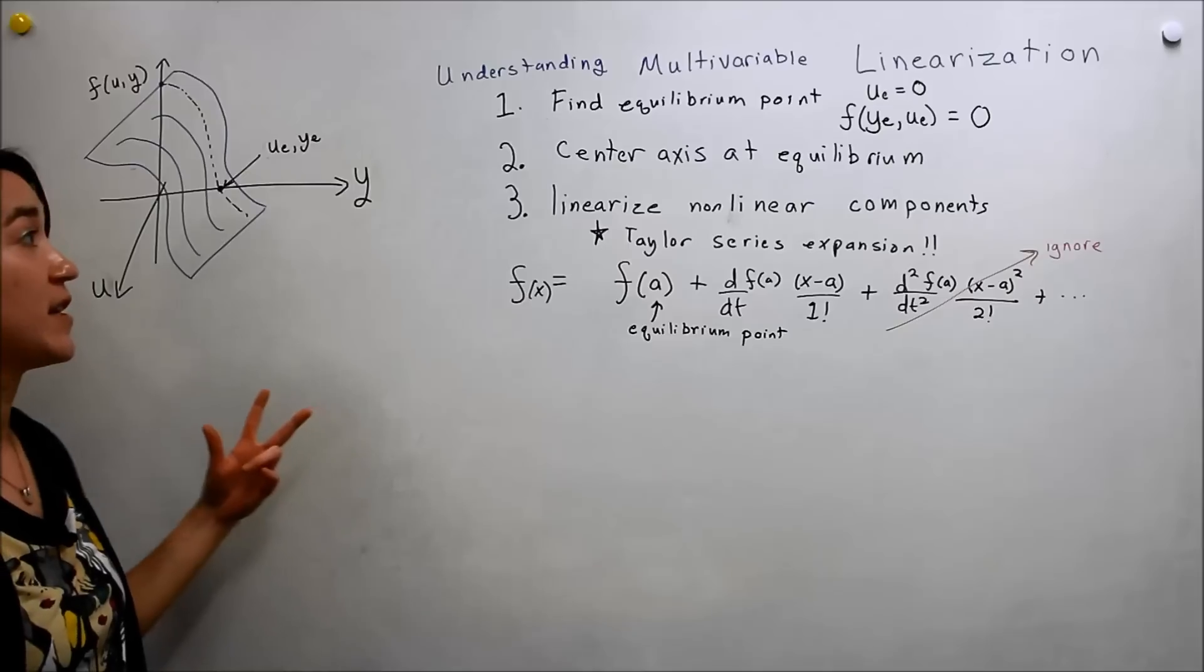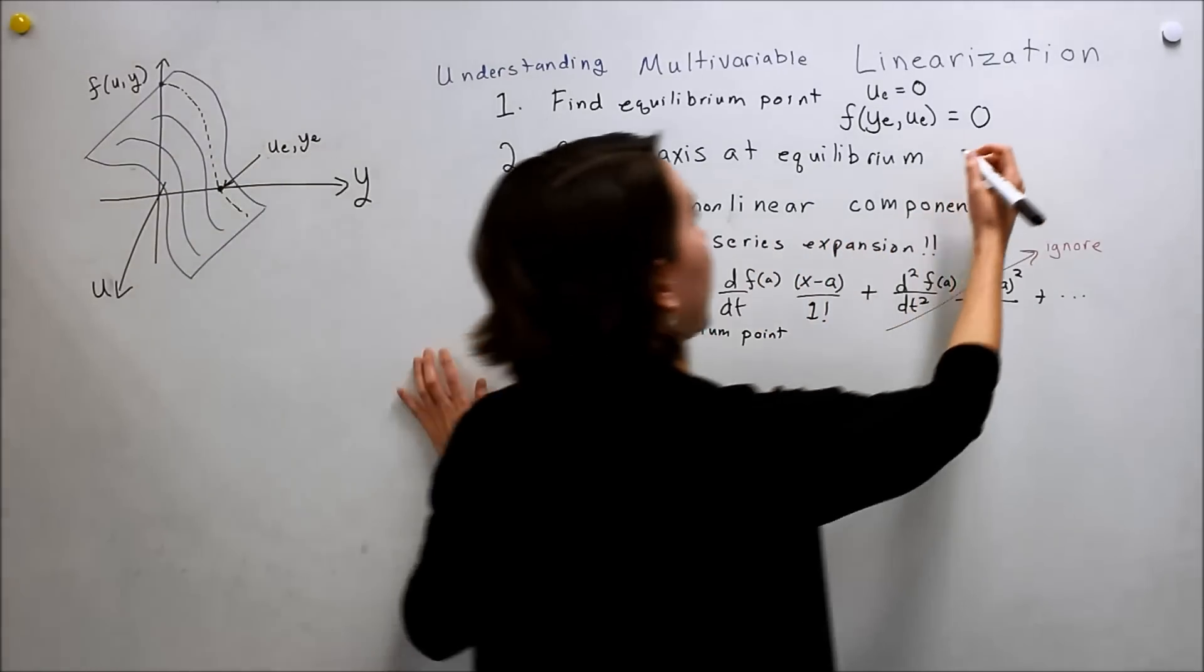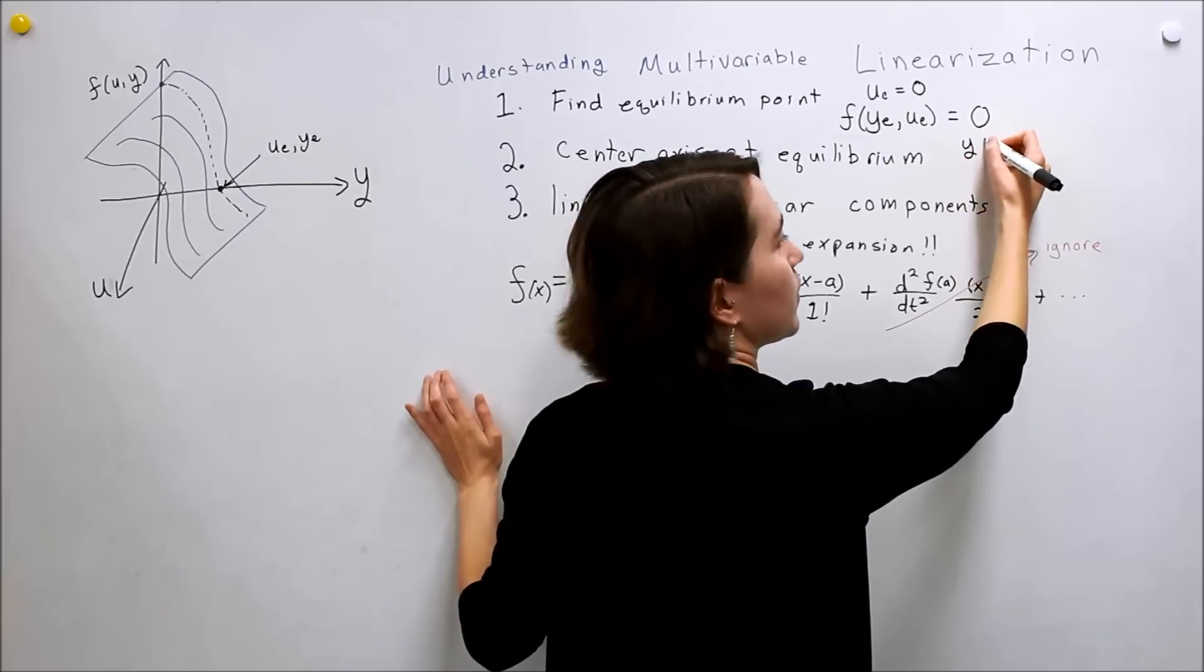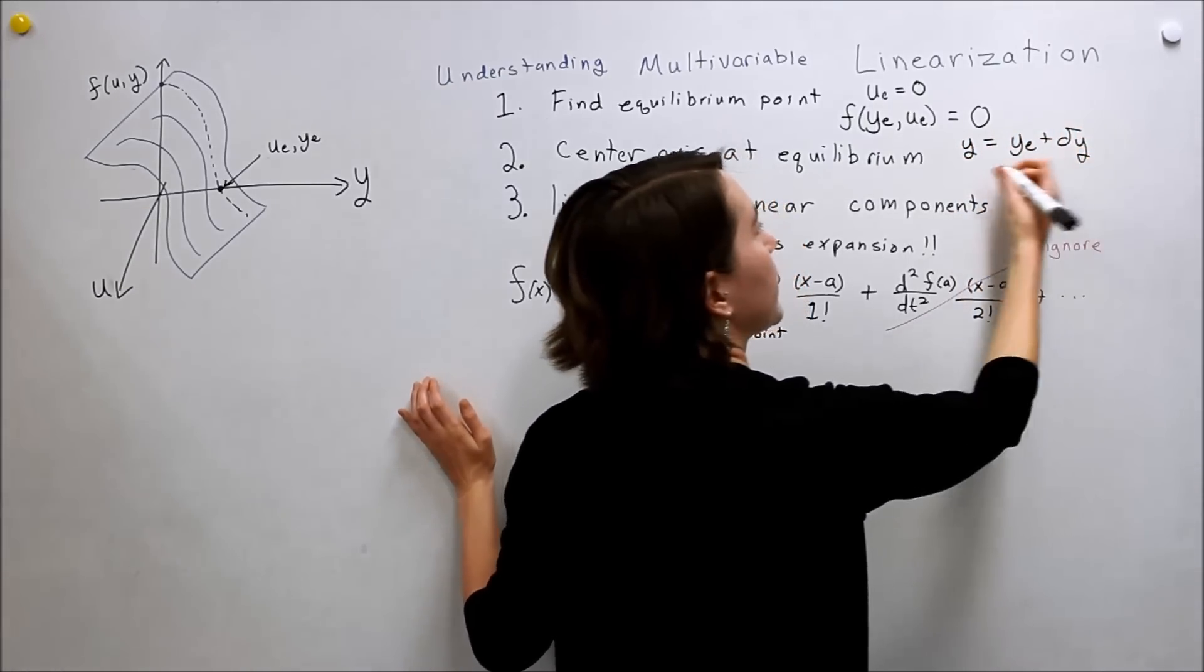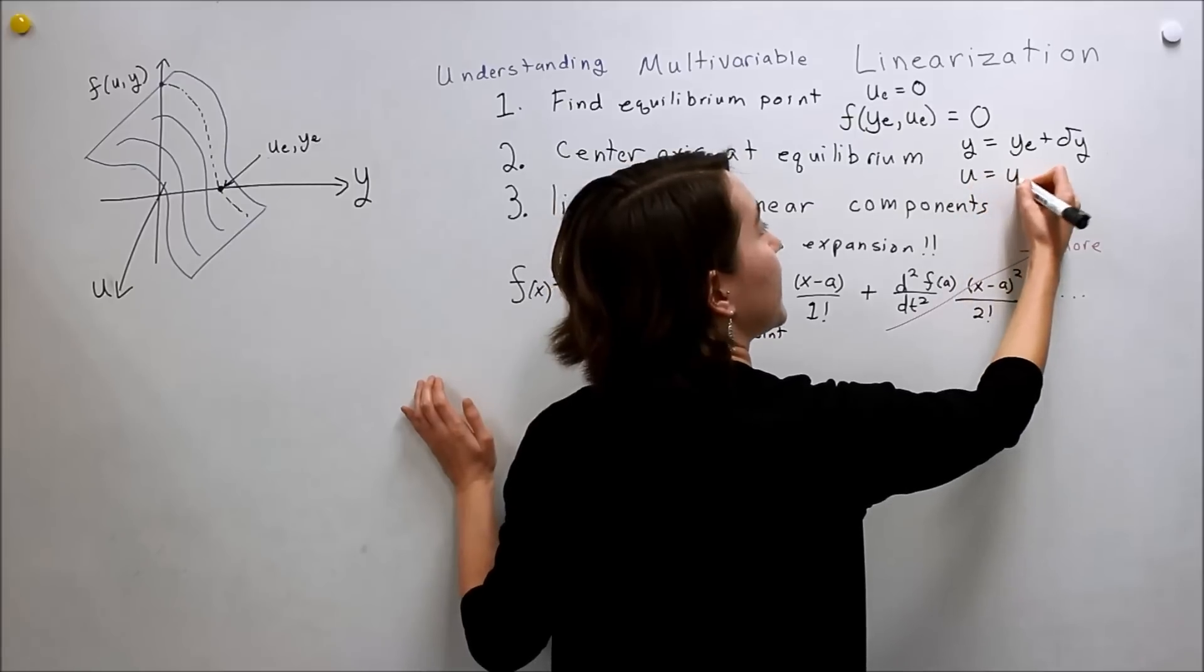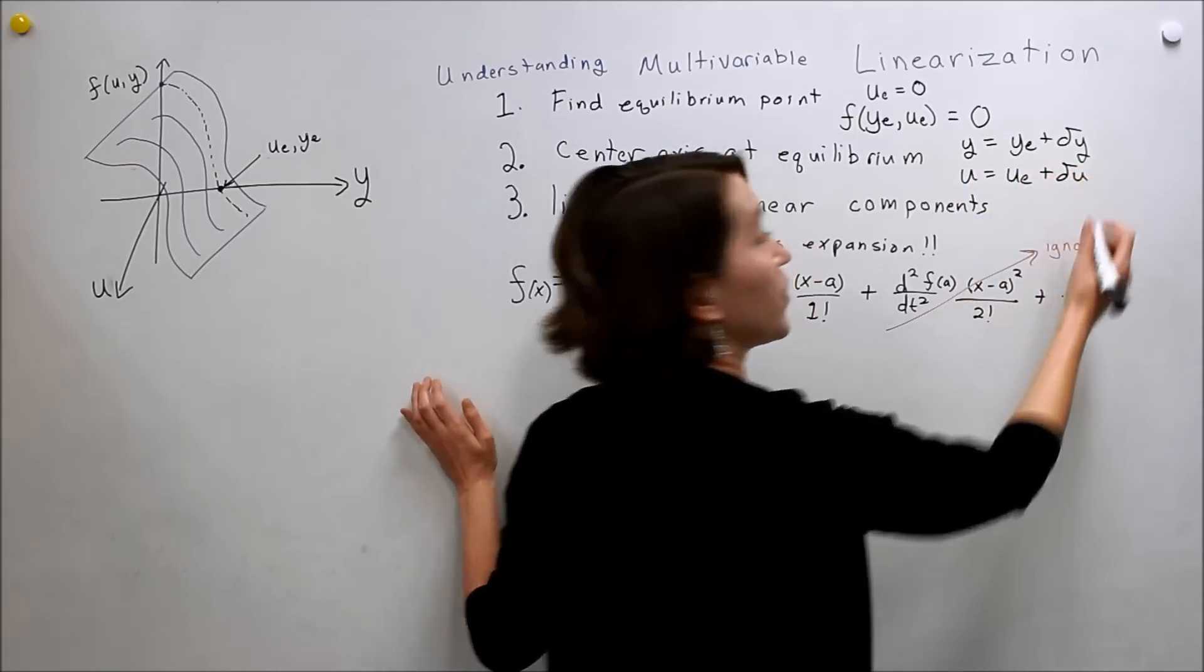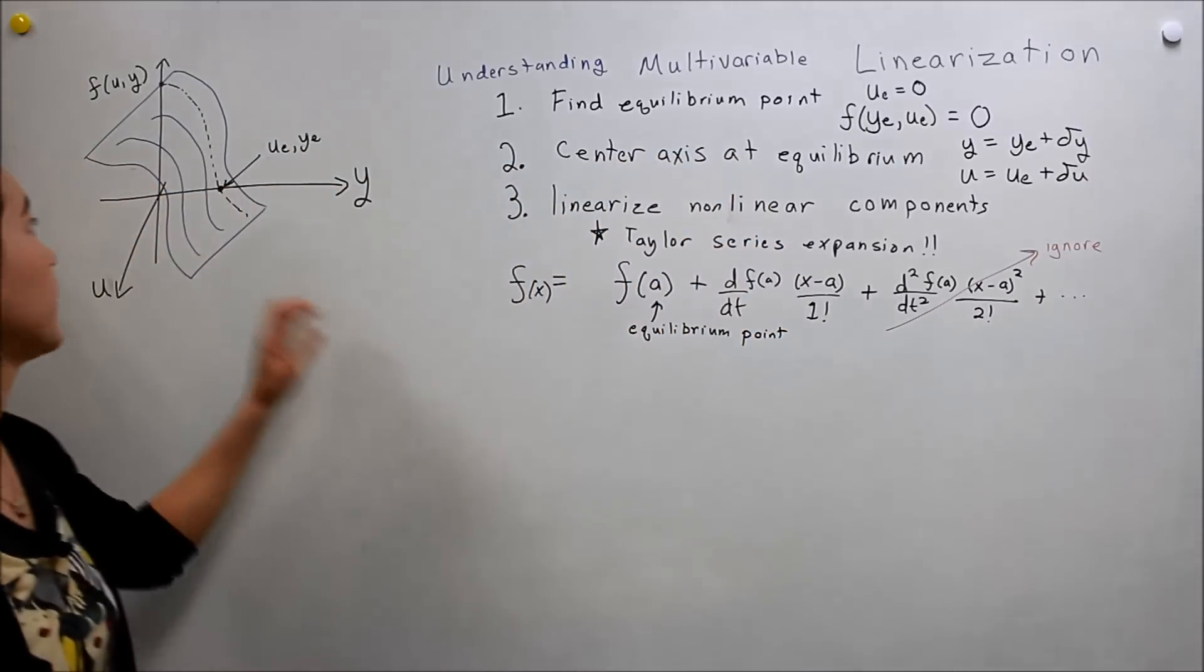But this time we're in multiple dimensions. So we'll have to not just do y, but y and u. So we'll redefine both. So y is going to be equal to the equilibrium point plus delta y. And then u will be the equilibrium point plus delta u. So we're redefining our variables with delta y and delta u.